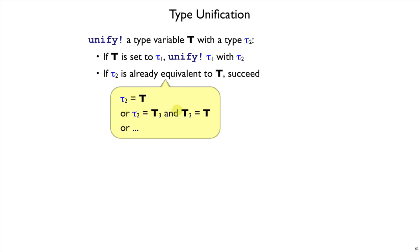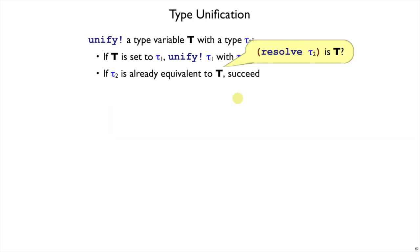And of course, you can add more type variables to continue this chain. So the way around this is to say, let's look at the resolve of tau2. Is that equal to T?